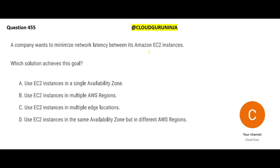The next question: a company wants to minimize network latency between EC2 instances — so you have one EC2 and another EC2, and when they are talking to each other they want good speed. How can you do that? If you keep them in different regions, one in India and one in Singapore, that would be bad because there is so much distance to travel, so that will not work.